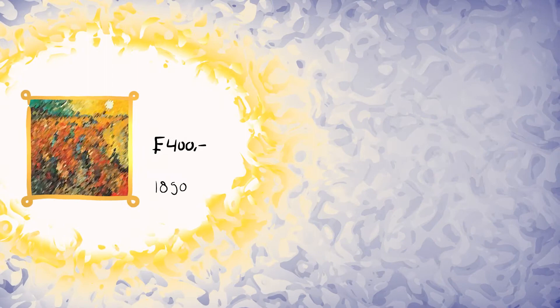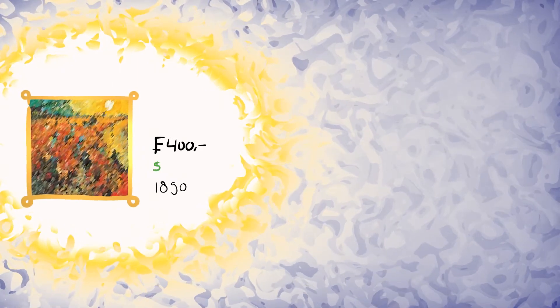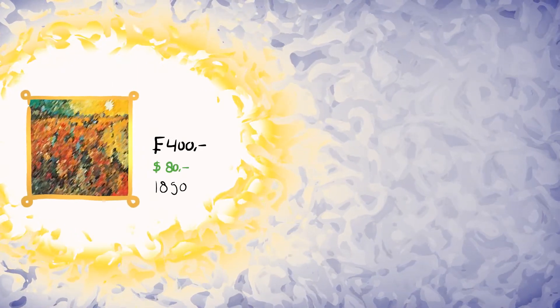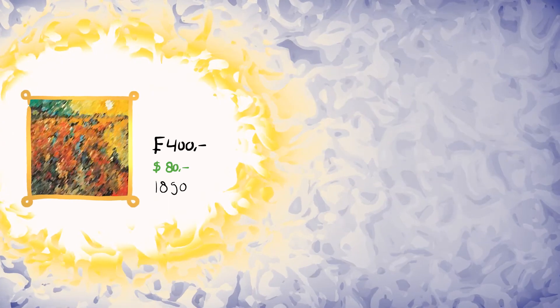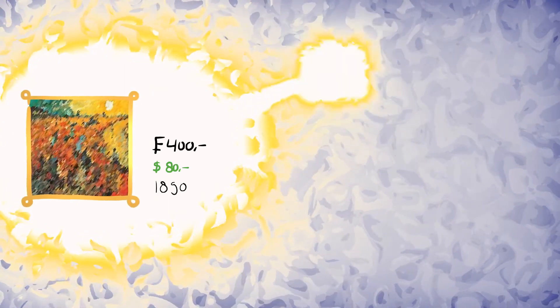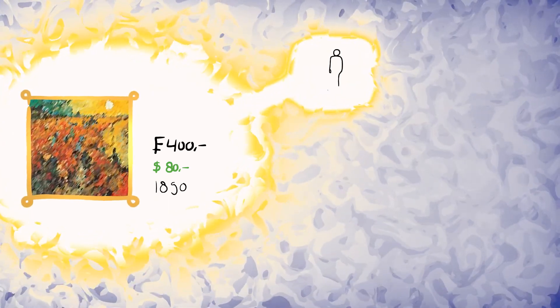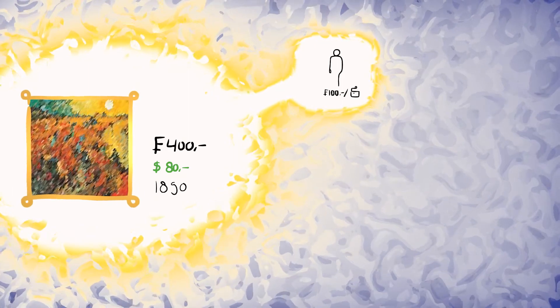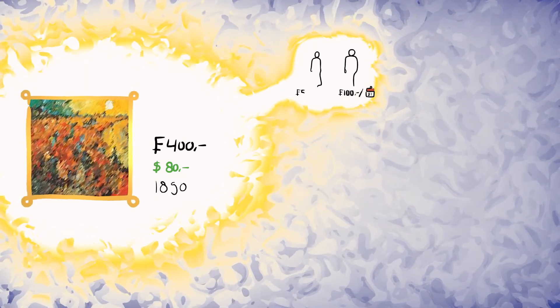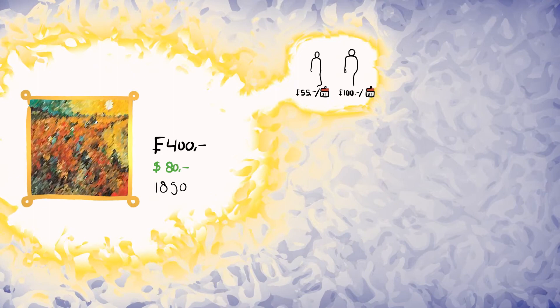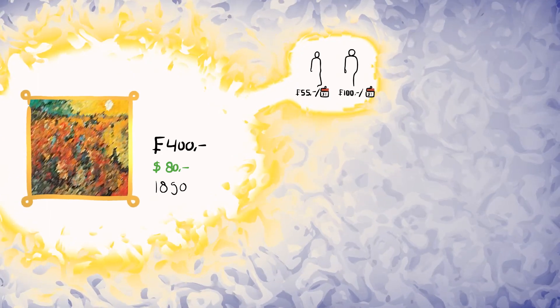400 francs in 1890 could buy the same amount of gold as roughly 80 dollars could, but to get a sense of the real costs, at that time the median French male made about 100 francs a month. For women it was 55, because at different times, I guess? I don't know. Anyway...